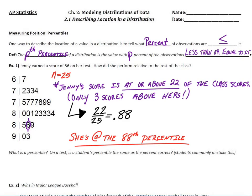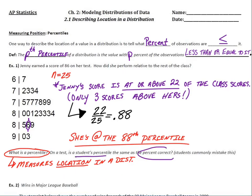And the next piece here is really just sort of a common confusion or a common mistake that students make. It says, what is a percentile? On a test, is a student's percentile the same as their percent correct? And that's a common mistake students make. So let's be really clear about what a percentile is. A percentile measures location in a distribution. It is not someone's score, their percent accuracy, on a test.